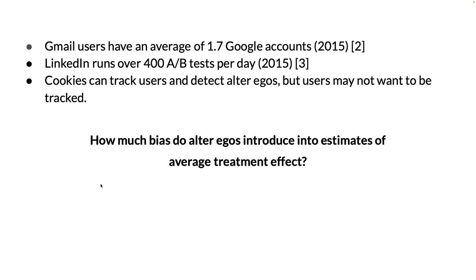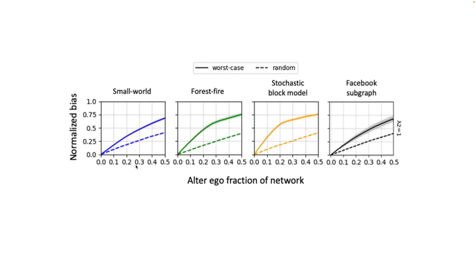Therefore, we seek to estimate the bias based on limited information, including the parameters of the A-B test and the estimated number of alter egos in the network. We simulate A-B tests on different kinds of networks and measure bias in the average treatment effect. We also show how to calculate the bias analytically. Looking at a sample of the results, we can see that in the worst case and the expected case, we get a moderate amount of bias, and the kind of network affects the worst case bias that you can get.